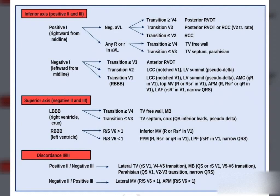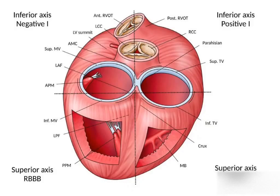Once the transition is identified, we should look at the axis — whether it is inferior axis, superior axis, or if there is discordance between lead 2 and lead 3. In the case of superior axis, we look further at bundle branch morphology: LBBB or right bundle branch morphology. Similarly for inferior axis, we also assess lead 1 — whether it is positive or negative.